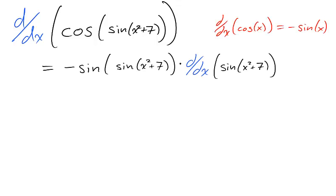We take the derivative of the outside, leaving the inside alone, and multiply by the derivative of the inside, which we have yet to find, and we'll need to apply the chain rule a second time in order to calculate.